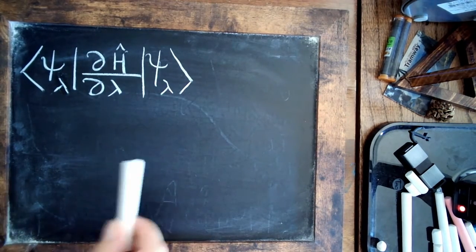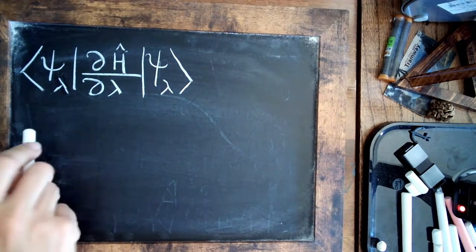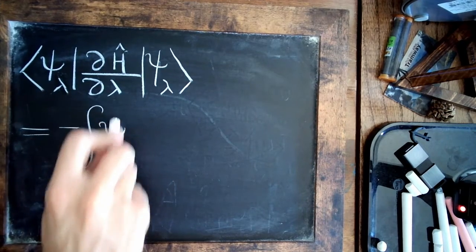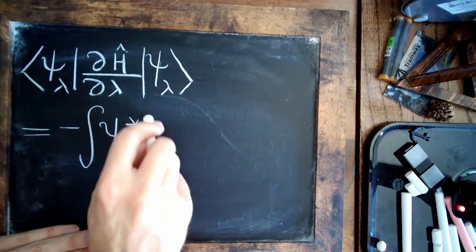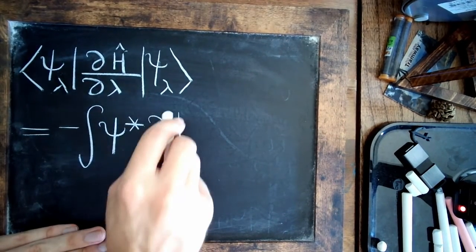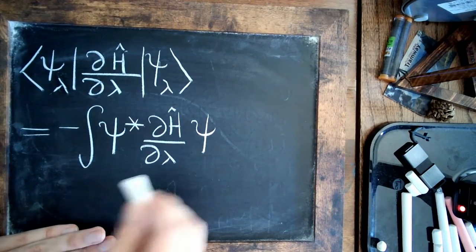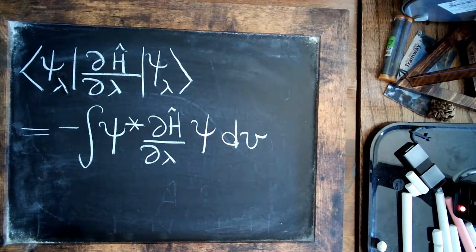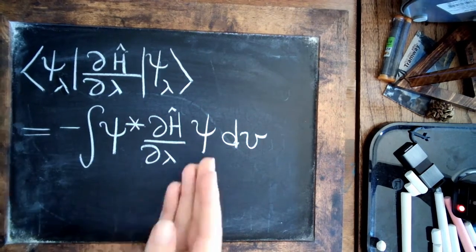So I know we're not quite yet familiar with this notation, but if we wanted to write it in terms of more integral notation, what this simply means is take the wave function, complex conjugated, sandwich it in the derivative of the Hamiltonian, and put the regular wave function, and then integrate over volume. So this would then give you the force in the lambda direction.